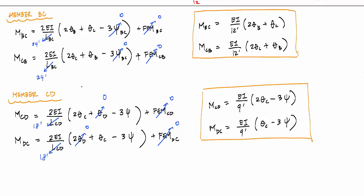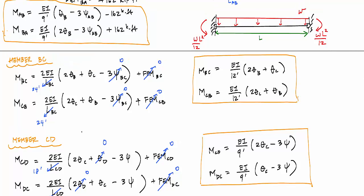All right, so here are my slope deflection equations. I've got six of them. And if I look at these slope deflection equations, you will notice that I have nine unknowns with six equations, which means I need three more equations. And those three equations are going to come from equilibrium.